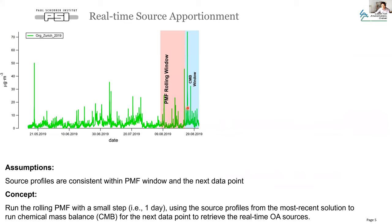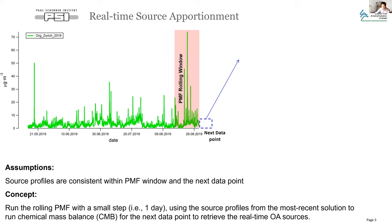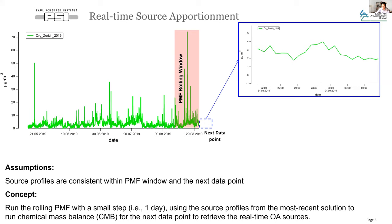To address these challenges, we propose a new method to conduct source apportionment measurement in a real-time manner. After we obtain a 14-day OA matrix from the ACSM or AMS, we conduct the rolling PMF for this dataset. Then we assume the source profile from this 14-day window is consistent with the following 24-hour data points, and we conduct the chemical mass balance for the next 24 hours to retrieve the real-time OA sources.